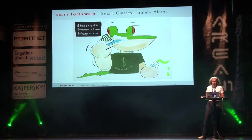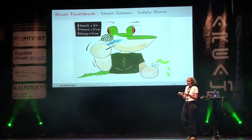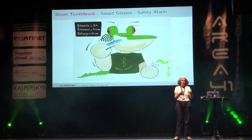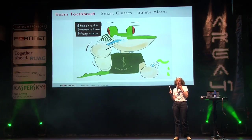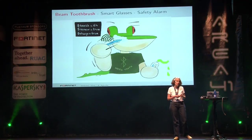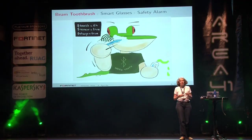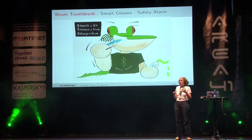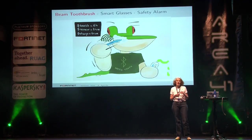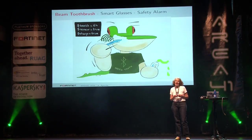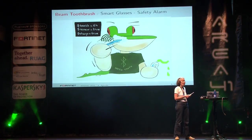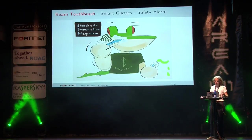The connected toothbrush: the goal is that a mobile application tells the end user if they brushed correctly — all four parts, upper, down left, down right, upper teeth. You also have some challenges to incentivize people. If you brush your teeth more than two minutes in a row, you earn a virtual star. That's the goal of this toothbrush.